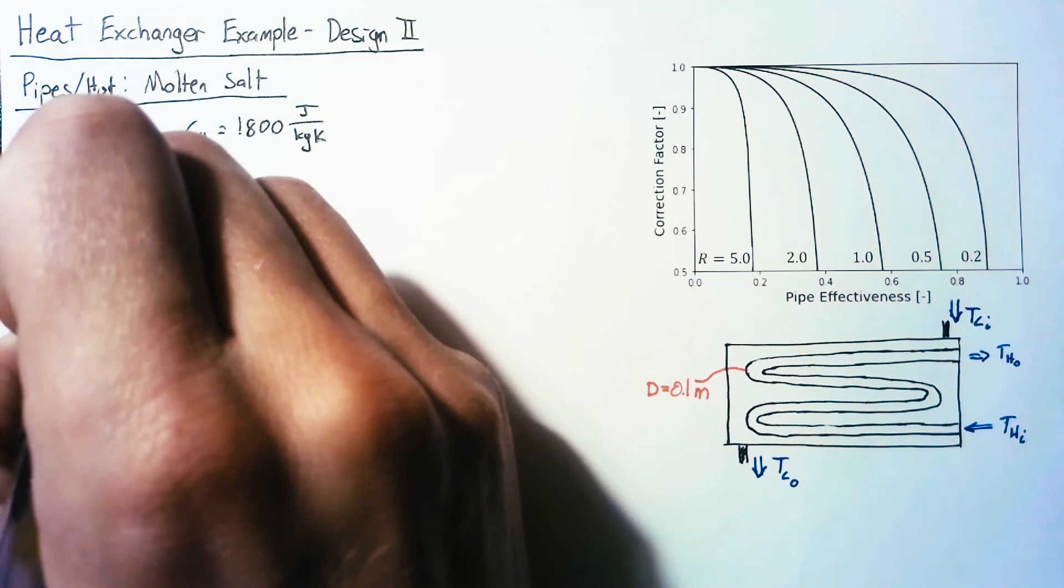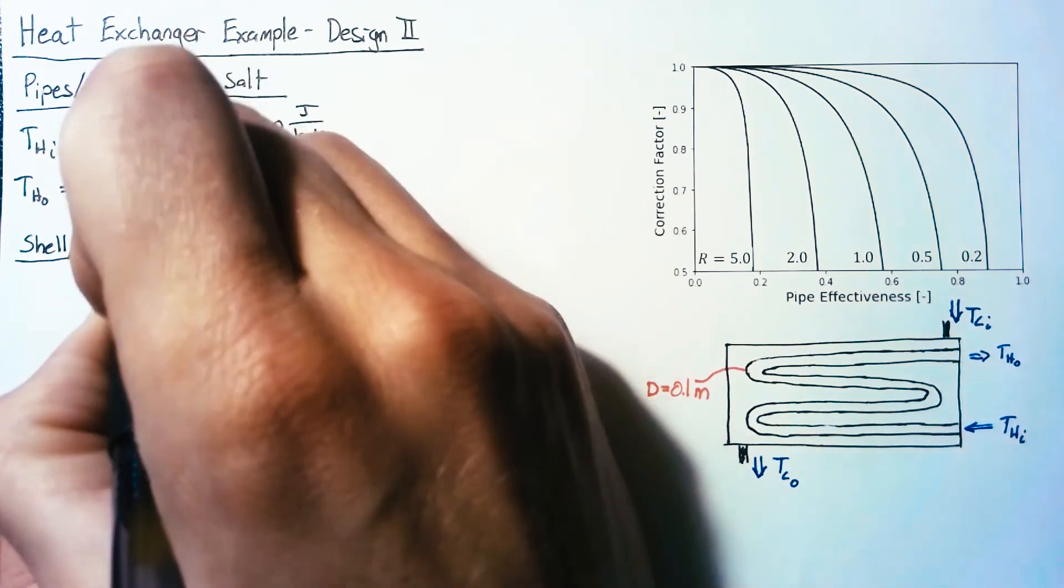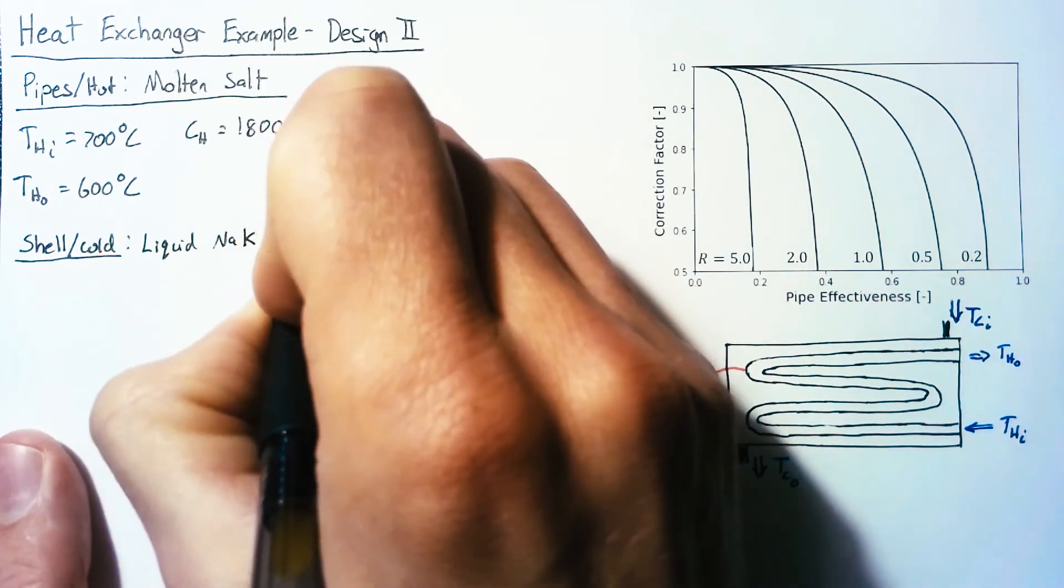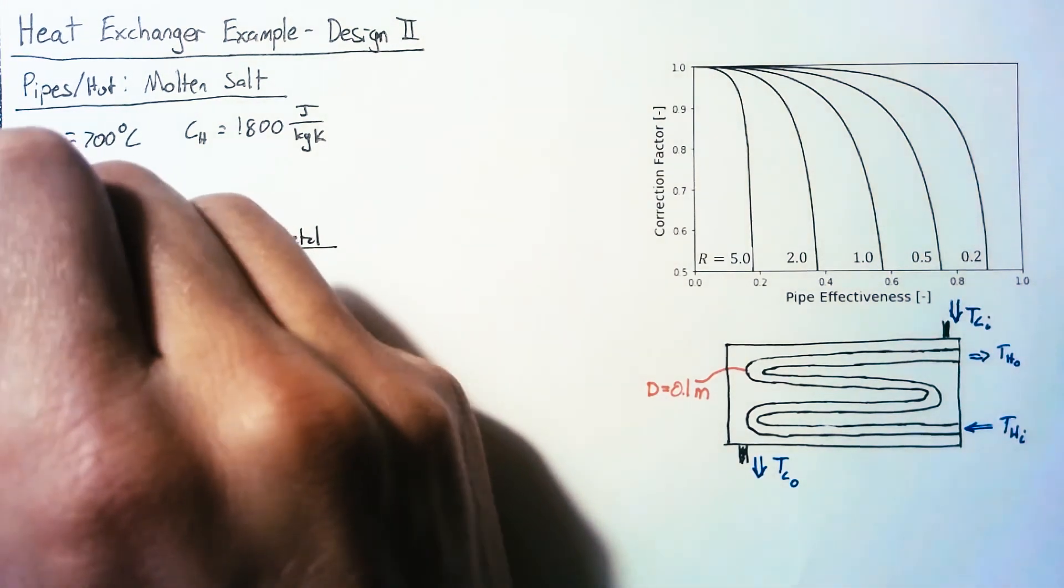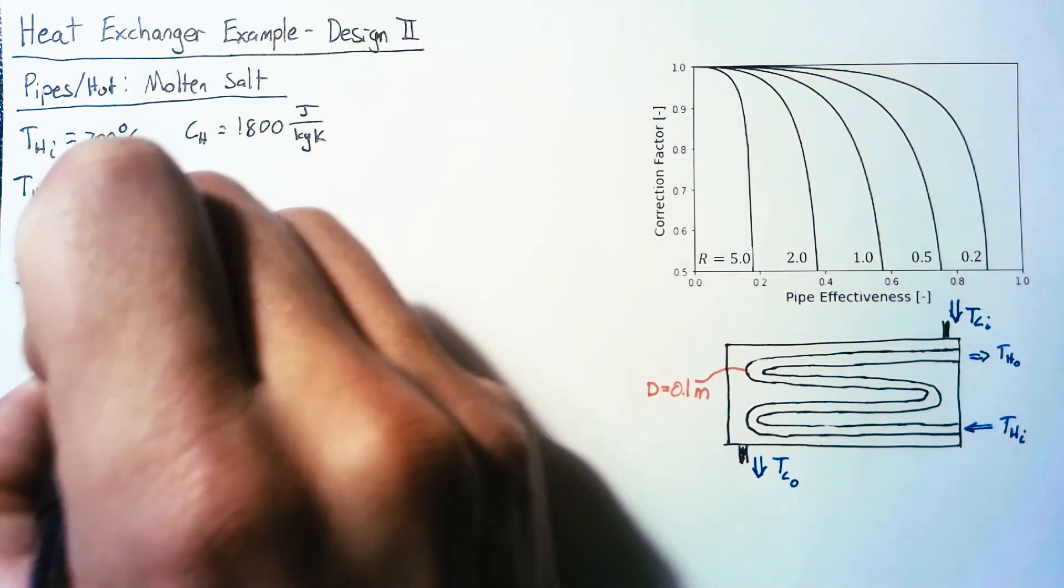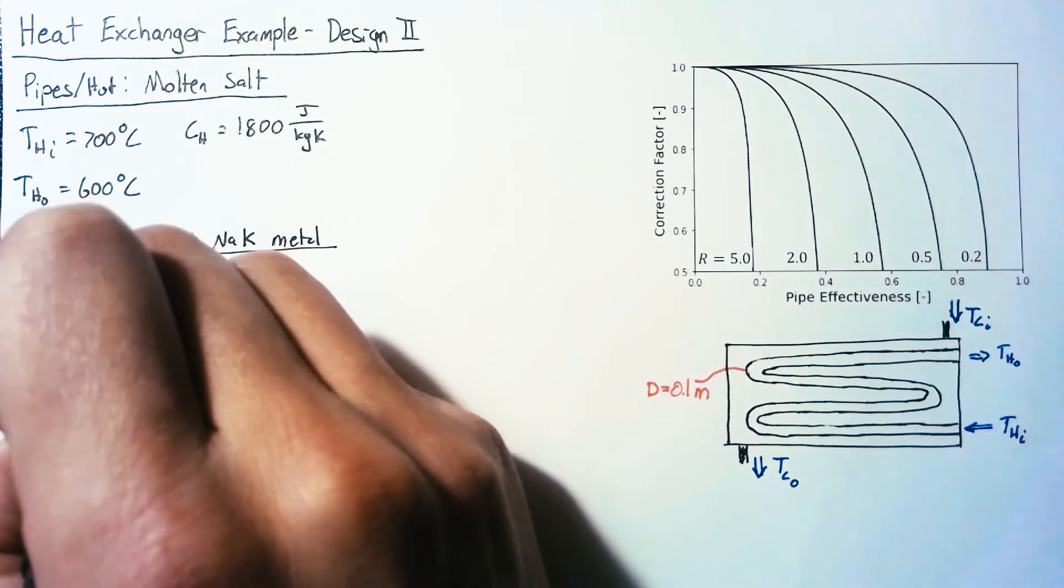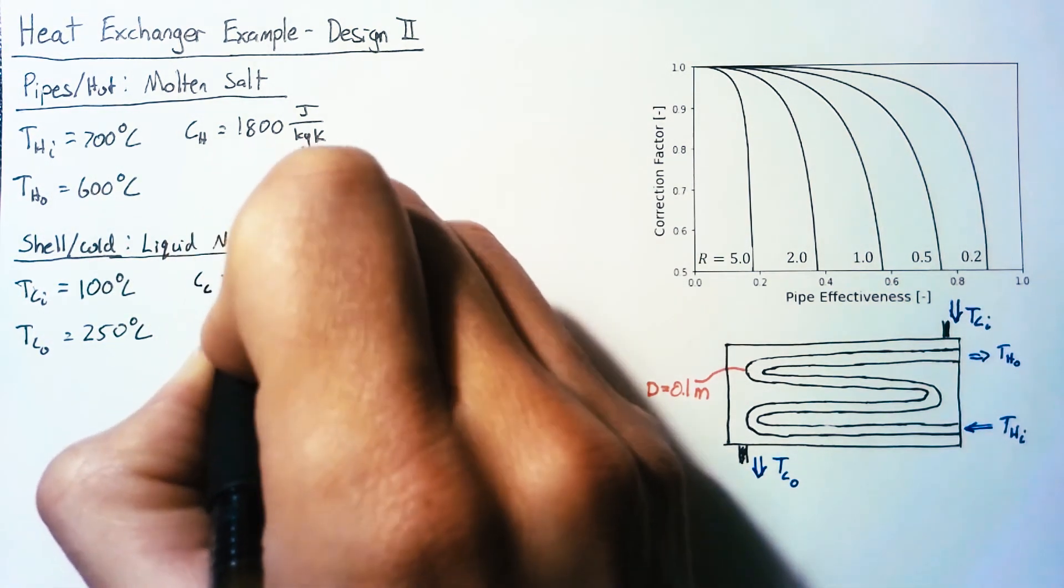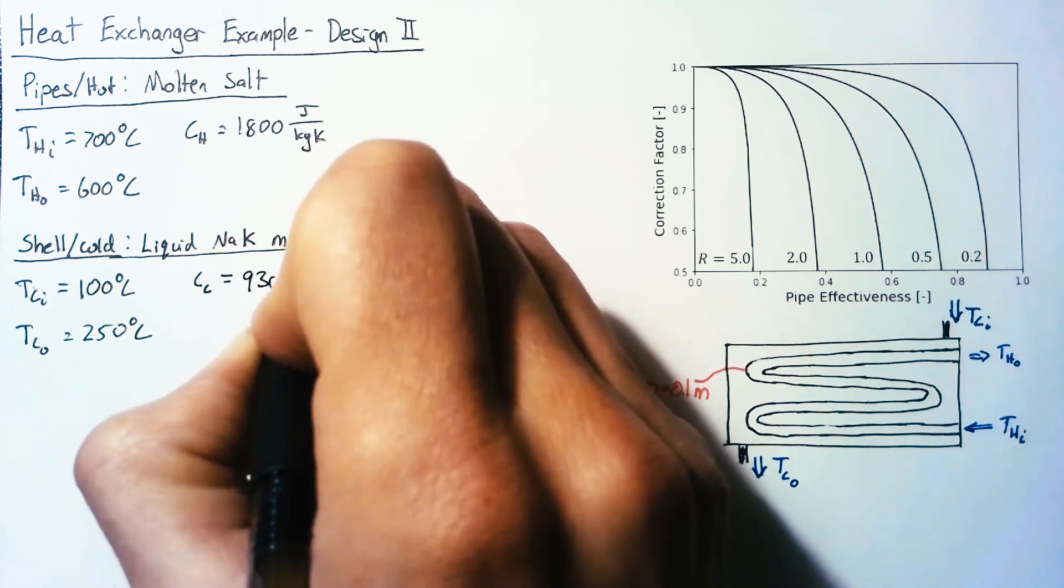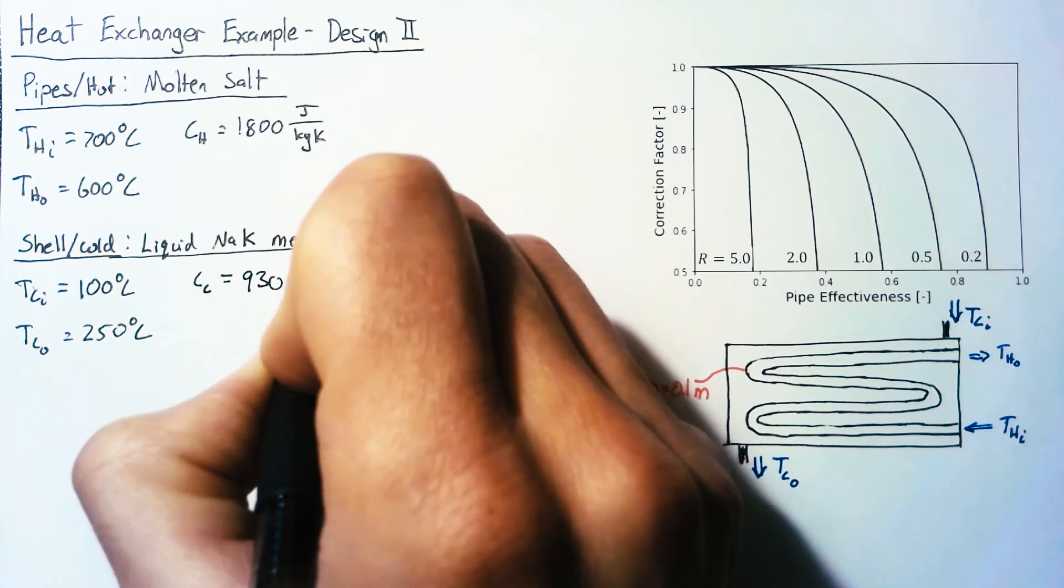On the shell side, or the cold side, we're going to have liquid sodium potassium metal. This is going to have an inlet temperature of 100 degrees Celsius and an outlet temperature of 250 degrees Celsius. And our specific heat for the metal here is going to be 930 joules per kilogram Kelvin.